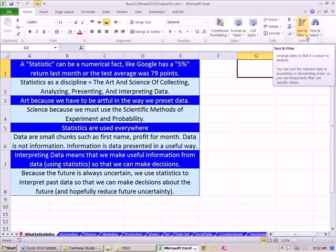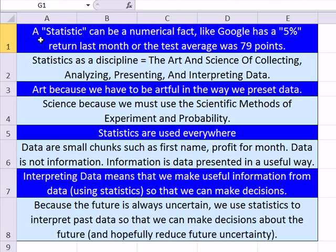Now, statistics, well, we could think of a single number. For example, a statistic can be a numerical fact, like Google has a 5% return last month, or a test average in a class like this is 79 points. Those are both called statistics, right? We have a single number, and we get statistics thrown at us all the time.